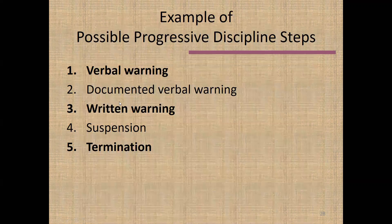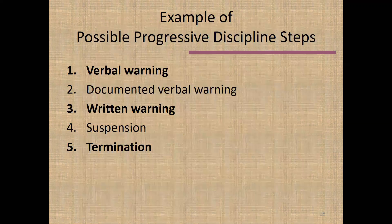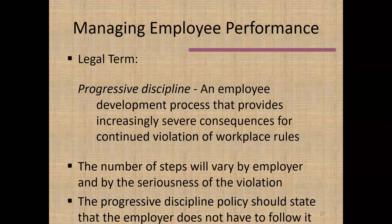Some employers document every single verbal warning. Some might move directly to a written warning for certain violations. Most employers don't use suspensions unless in a union workforce. Progressive discipline works very well — taking off the suspension step — for tardiness and attendance issues not involving FMLA or Americans with Disabilities Act issues, for productivity issues, and for policy violations that aren't especially severe, like minor dress code issues or minor customer complaint issues.